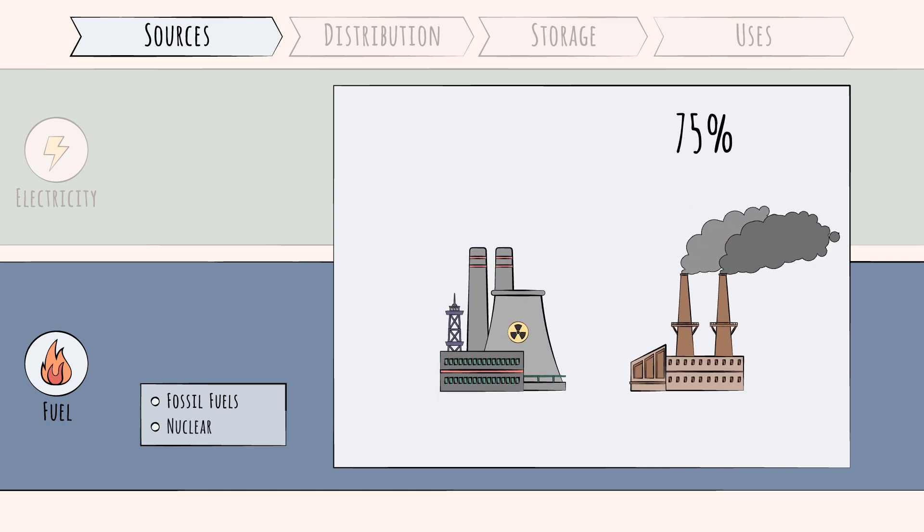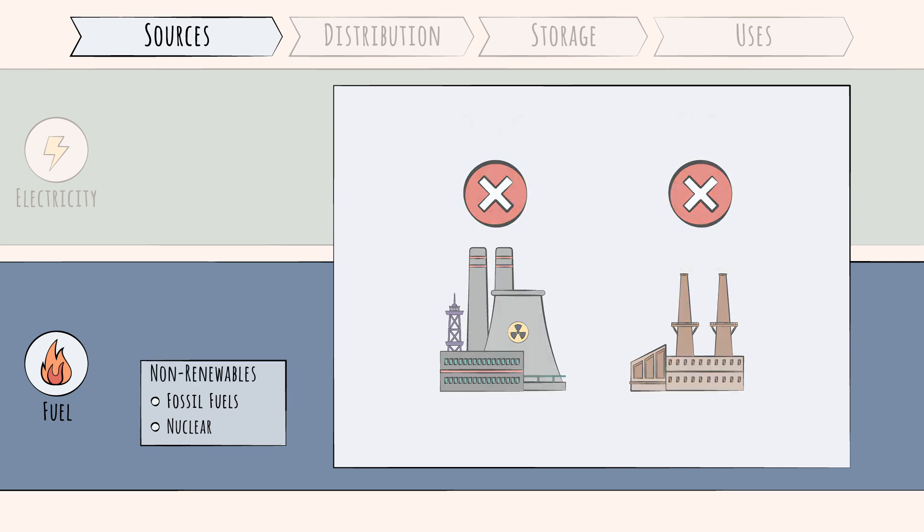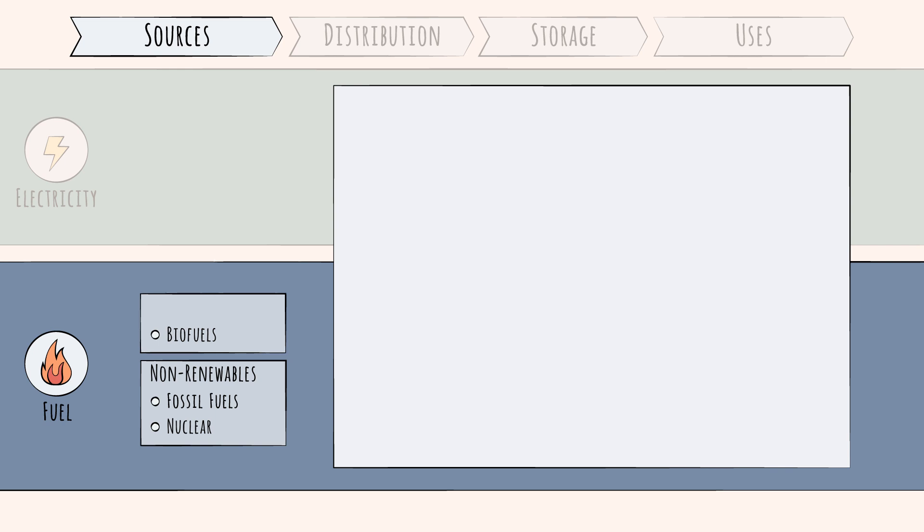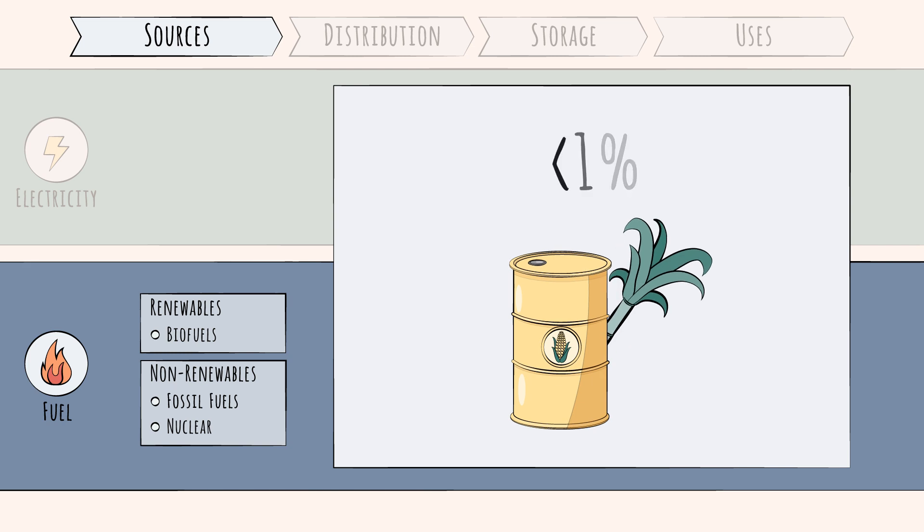Nuclear accounts for roughly three to four percent of global energy. Fossil fuels and nuclear are considered non-renewable resources—eventually they will run out. Biofuels, on the other hand, are considered a renewable fuel source. These come from feedstocks like corn and sugarcane and account for less than one percent of our energy today.